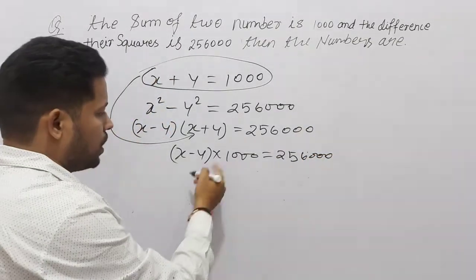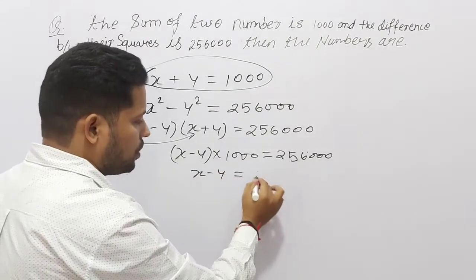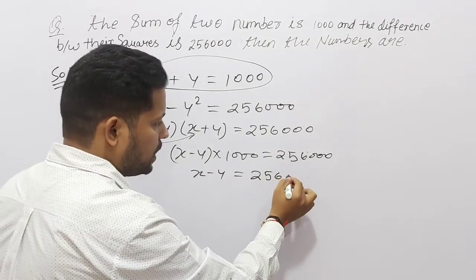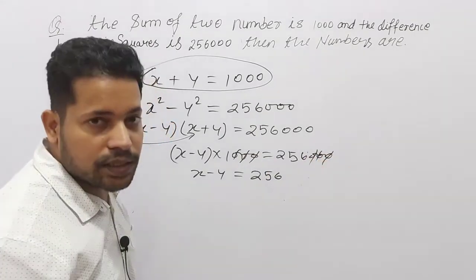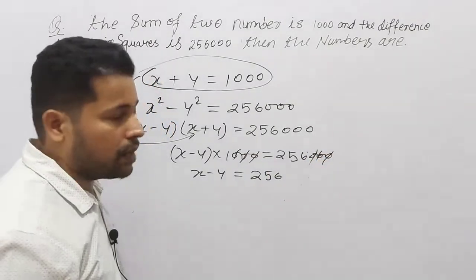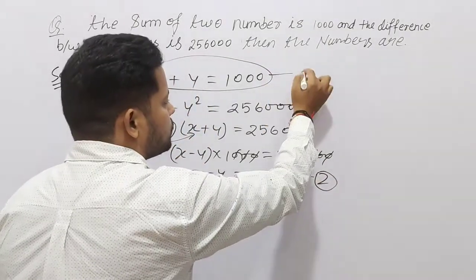Correct? अभी 1000 उदर जाएगा, तो divide हो जाएगा. और यह मिल जाएगा आपको 256 क्योंकि यह 0 से 000 cancel. So, 256 मिल गया. So, this is equation second और यह equation first है, suppose.